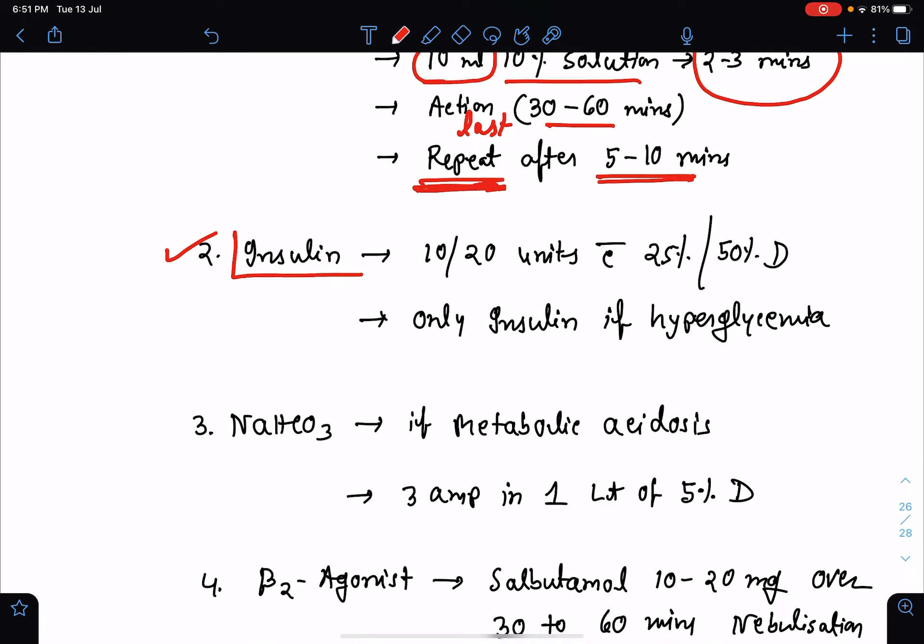Insulin causes intracellular shift of potassium from the extracellular fluid to inside the cell. We may give 10 or 20 units of insulin with either 25% or 50% dextrose respectively. If the patient is having hyperglycemia, we may not give dextrose. We need to give only insulin.